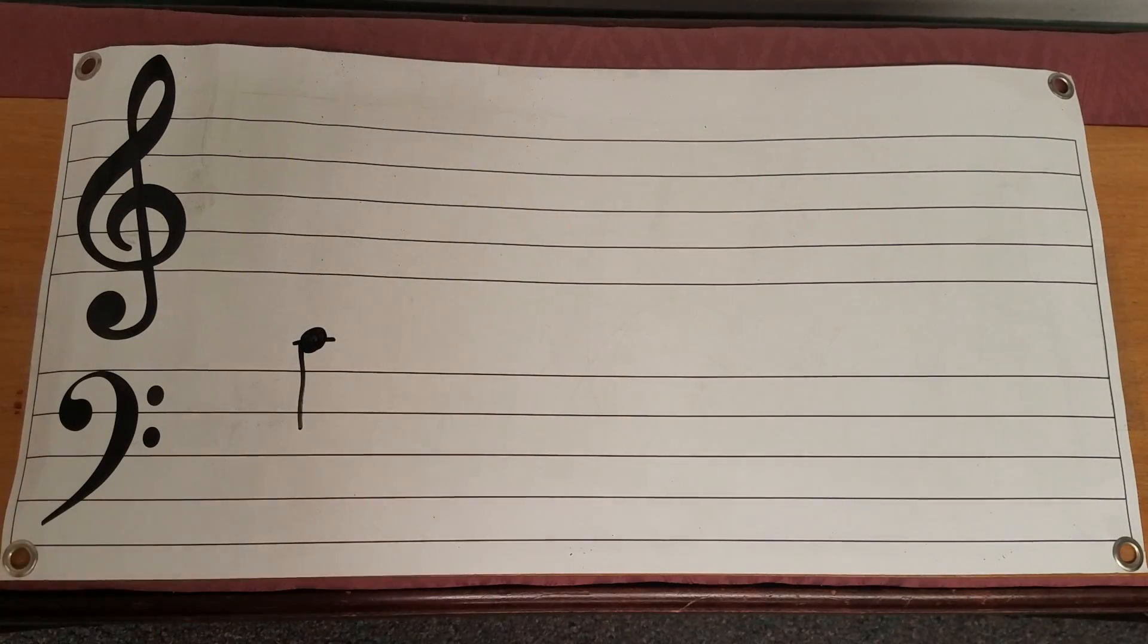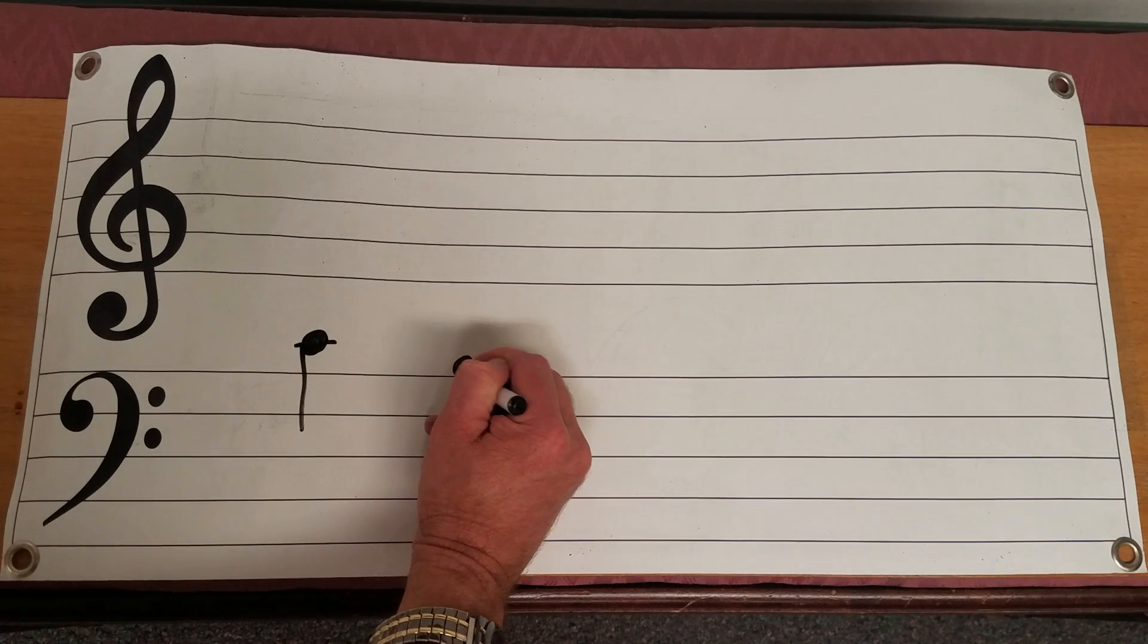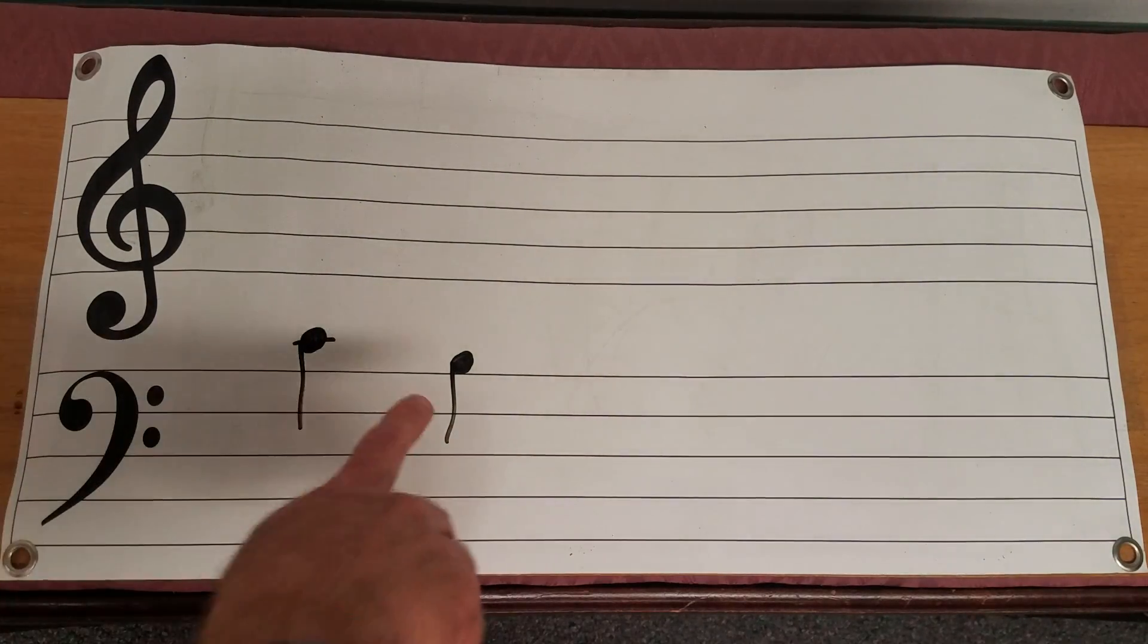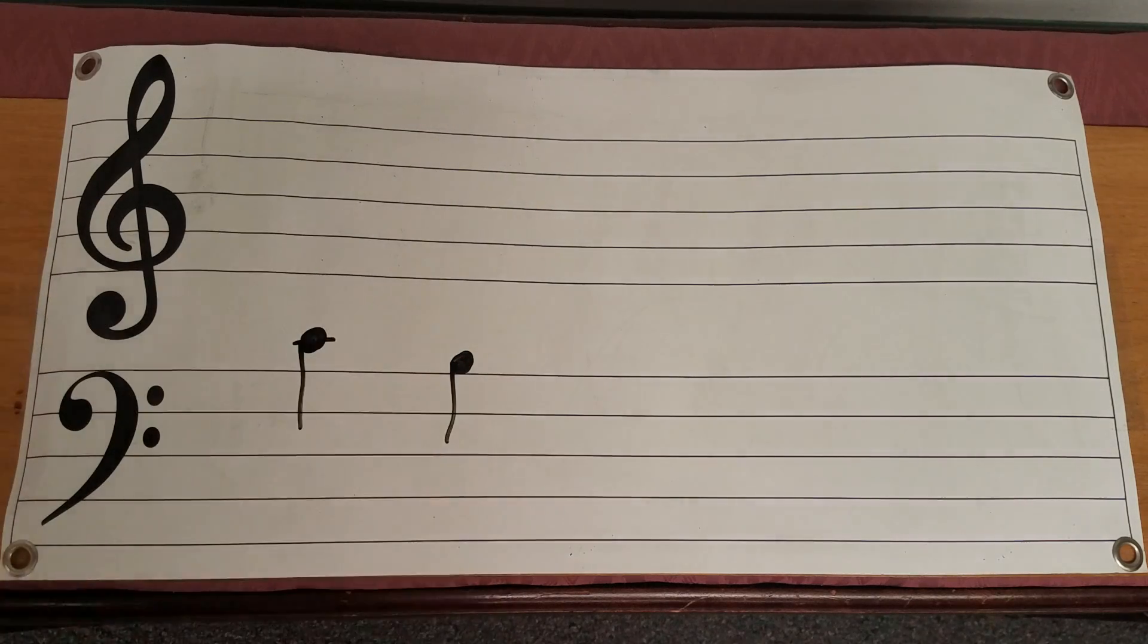And in the last lesson you may recall that I showed you once again what we call the middle C or simply C and then the B and I had that neat little memory device about the B. Think of it like a bird, B for birds, sitting on top of the wire.